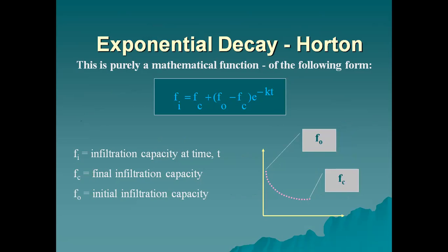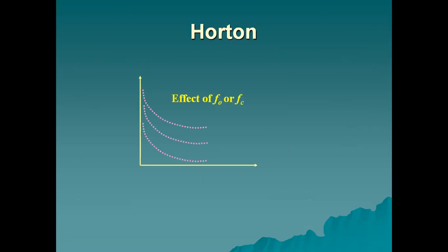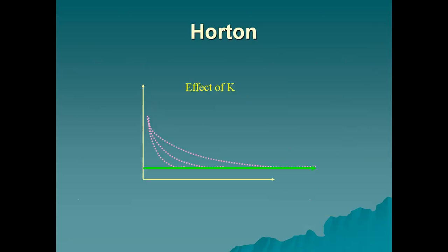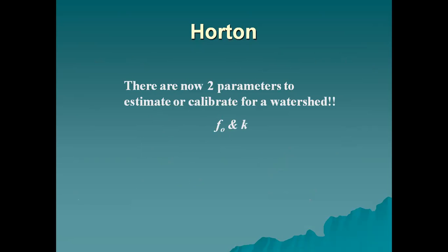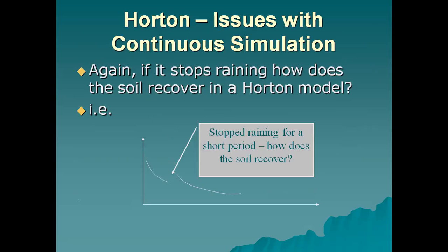Exponential decay — Horton equation: this is a mathematical function of the form F(t) = Fc + (F0 − Fc) × e^(−kt), where F(t) is the infiltration capacity at time t, Fc is the final infiltration capacity, and F0 is the initial infiltration capacity. The Horton model assumes that precipitation supply is greater than the infiltration rate. There are two parameters to estimate and calibrate: F0 and k. When using Horton with continuous simulation, the question arises: if it stops raining for a short period, how does the soil recover?